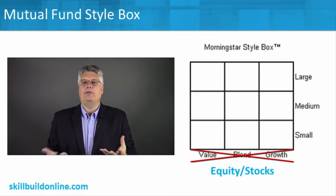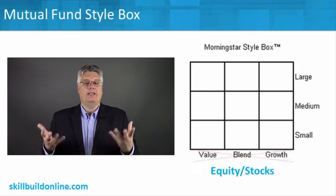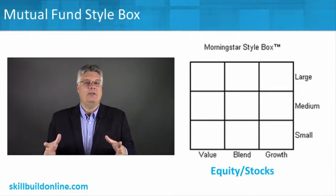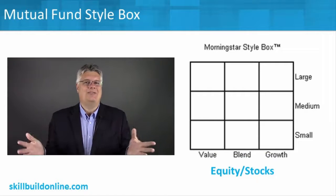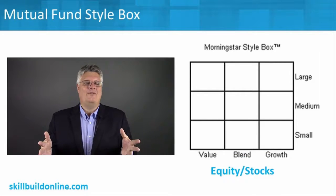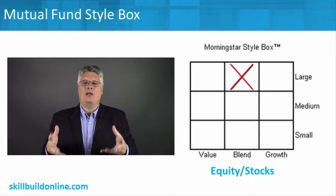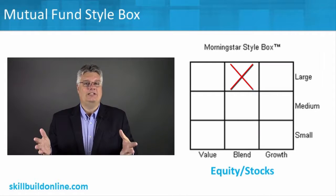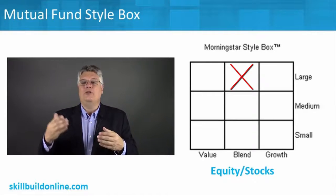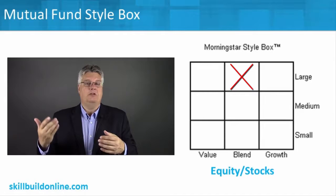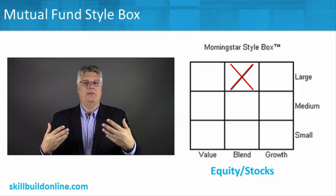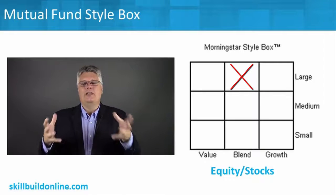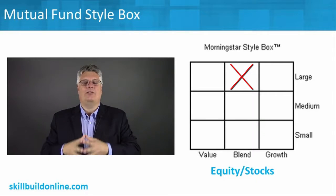For example, an S&P 500 fund — Vanguard is the most famous for that, but Fidelity, Schwab, everybody seems to have an S&P 500 fund. If you take the 500 largest United States stocks, you're going to have a mixture of growth stocks like Apple and Amazon, and value stocks like ones that pay dividends, maybe Coke or Johnson & Johnson. You're going to have that mixture in those big 500 large companies, so that's where it would be a blend.